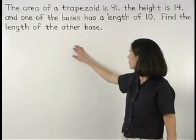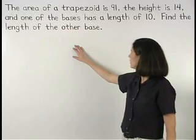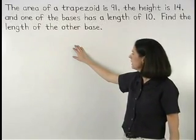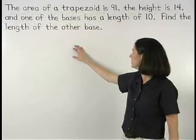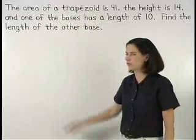The area of a trapezoid is 91, the height is 14, and one of the bases has a length of 10. Find the length of the other base.